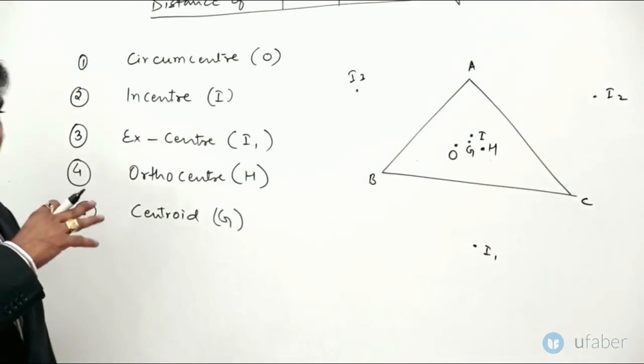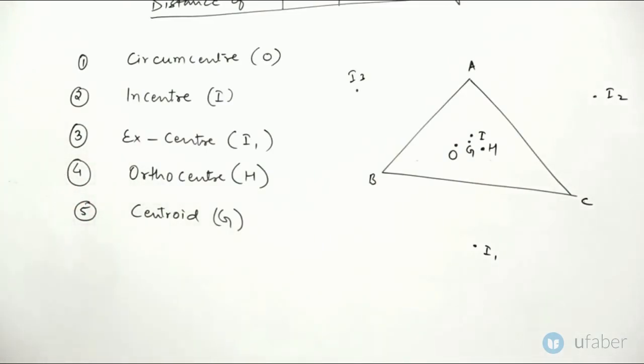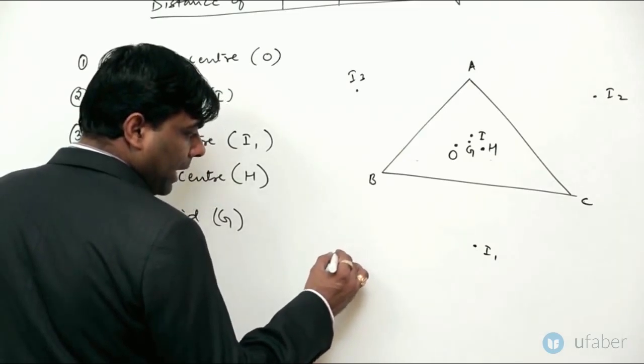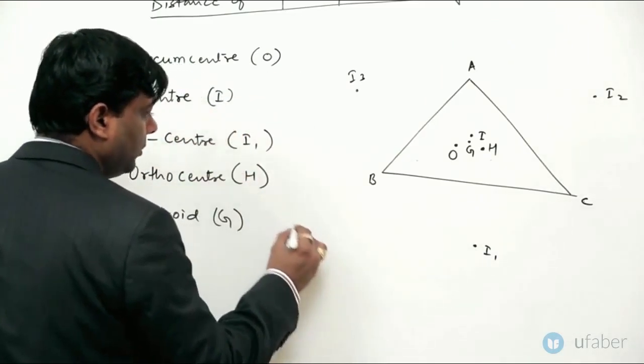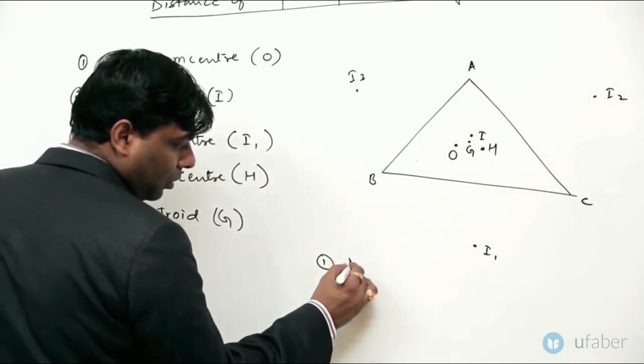Hemari paas ho ga bilkul tino point ka mean point. So, jaha par kahi ho ga G. So, is-tarah se, 4 point jaha hai, woh inside this circle hote hai, and baqi joh incenter excenter hai, woh hamare paas bahar hota hai.